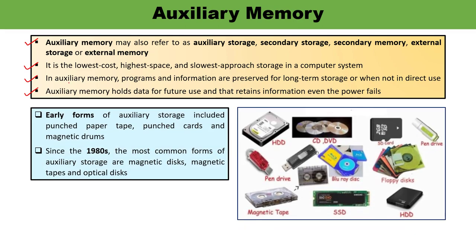In the early forms of auxiliary storage, it was in the form of punched paper tape, punched cards, and magnetic drums. But from the 1980s onwards, there are some very popular forms of auxiliary storage, which include the magnetic disk — about which I'm going to talk in this video — magnetic tape, and optical disk.